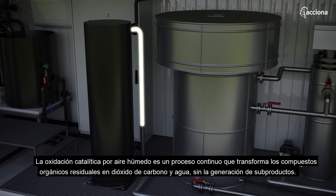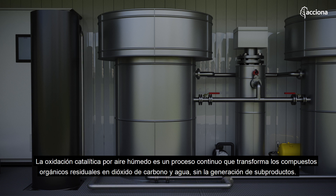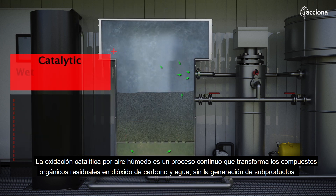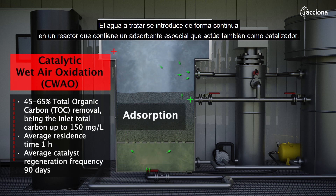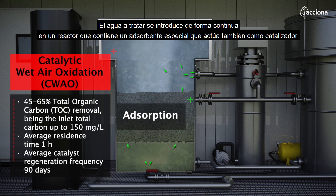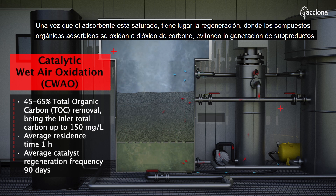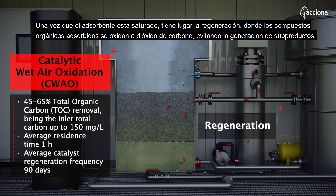Catalytic wet air oxidation is a continuous process that transforms the residual organic compounds into carbon dioxide and water without the generation of by-products. The water to be treated is introduced continuously into a reactor that contains a special absorbent that also acts as a catalyst. Once the absorbent is saturated, regeneration takes place, where the absorbed organic compounds are oxidized into carbon dioxide and water, avoiding the generation of by-products.